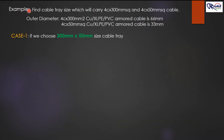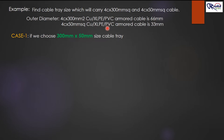Now let's see an example. Find the cable tray size which will carry: 4-core 300 mm² copper XLPE PVC armored cable with outer diameter 66 mm, and 4-core 50 mm² armored cable with outer diameter 33 mm.